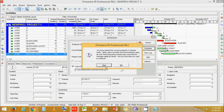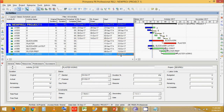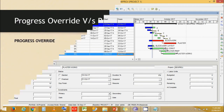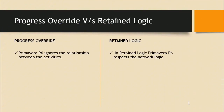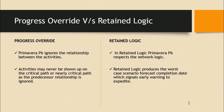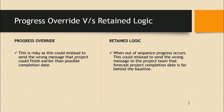If we schedule again on Progress Override, the end duration remains the same. In summary, Primavera ignores the relationship between activities in Progress Override, while in Retain Logic it respects the network logic. In Progress Override, activities might never show up on the critical path since predecessor relationships are ignored. In Retain Logic, it creates a worst-case scenario completion date, giving early warning signs to expedite delayed work. Progress Override could give a misleading message that the project is finishing ahead of schedule.